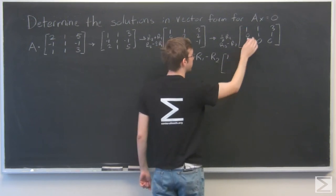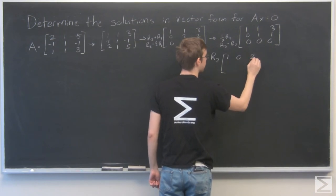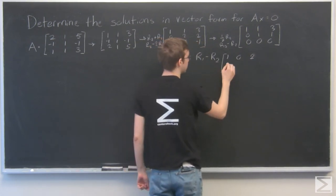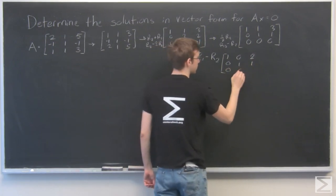So 1 minus 0 is 1. 1 minus 1 is 0. 3 minus 1 is 2. And row 2 stays as it is: 0, 1, 1. And row 3 is all 0s.